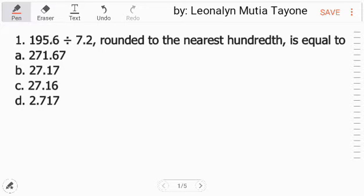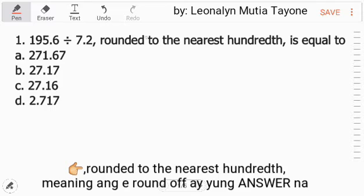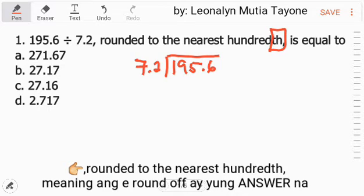Question number 1: 195.6 divided by 7.2 rounded to the nearest hundredth is equal to what? Let's divide. 195.6 divided by 7.2. This divisor of 7.2, let's make it a whole number. Move the decimal to the right side one time to make it 72. What we did here moving to the right side, we'll do the same to 195.6. If you moved once, move once here too. So this decimal, align it up here.